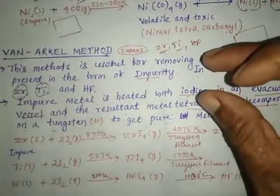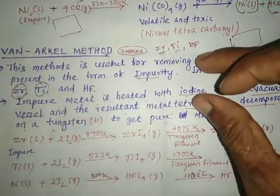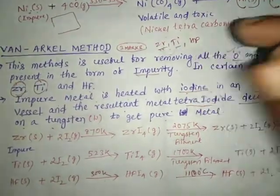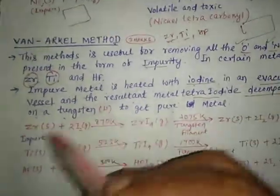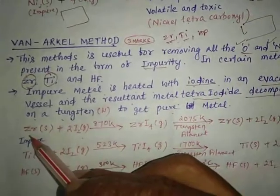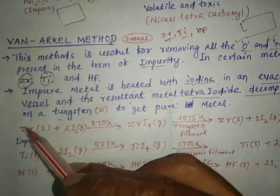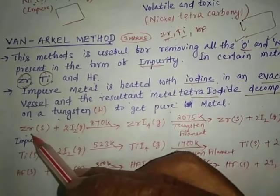This is the chemical method of the Van Arkel theory. You can see zirconium — its symbol is Zr and its atomic number is 40. The impure zirconium reacts with iodine.